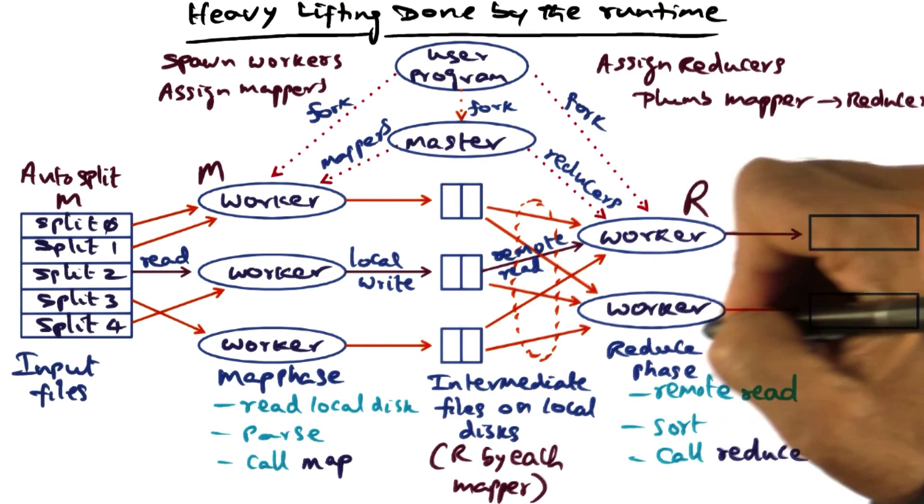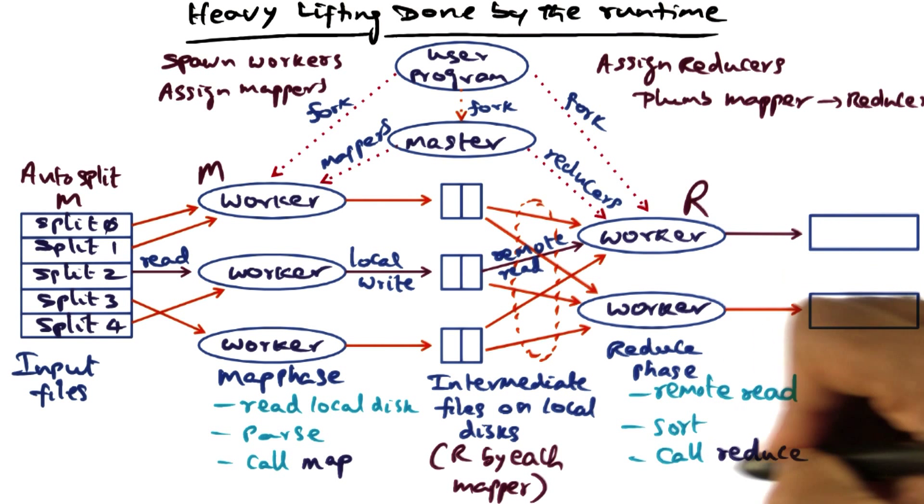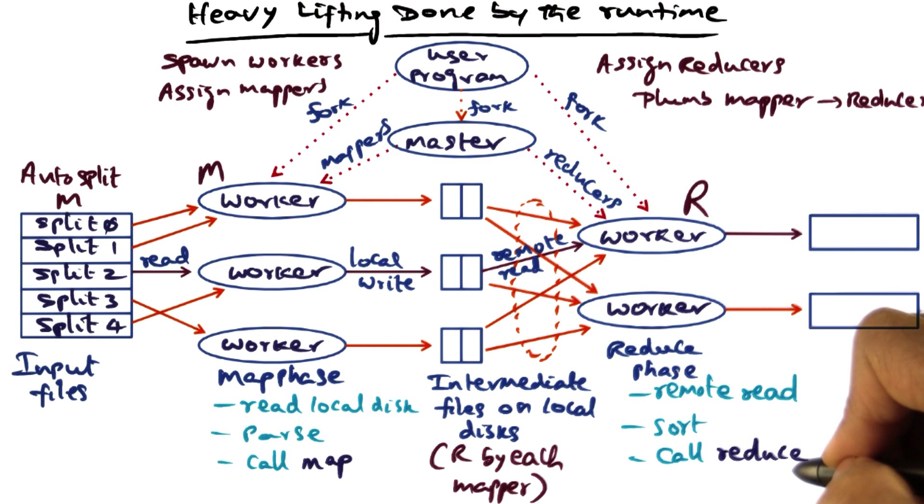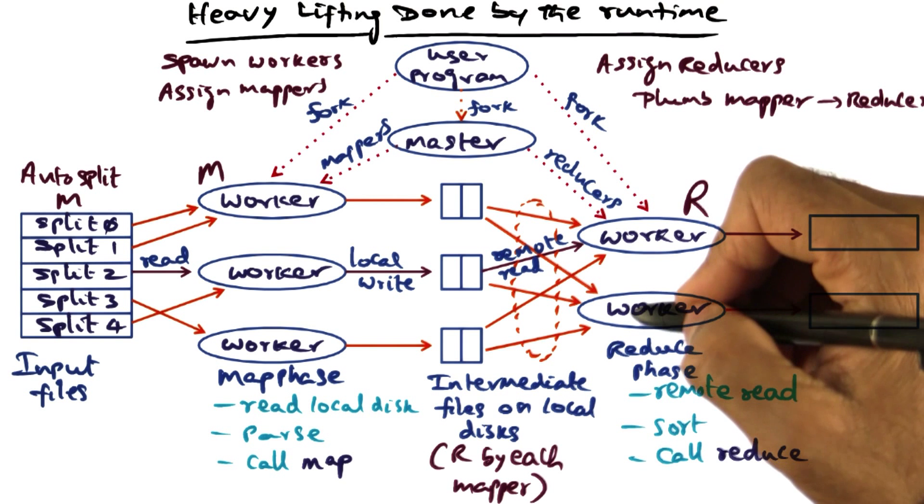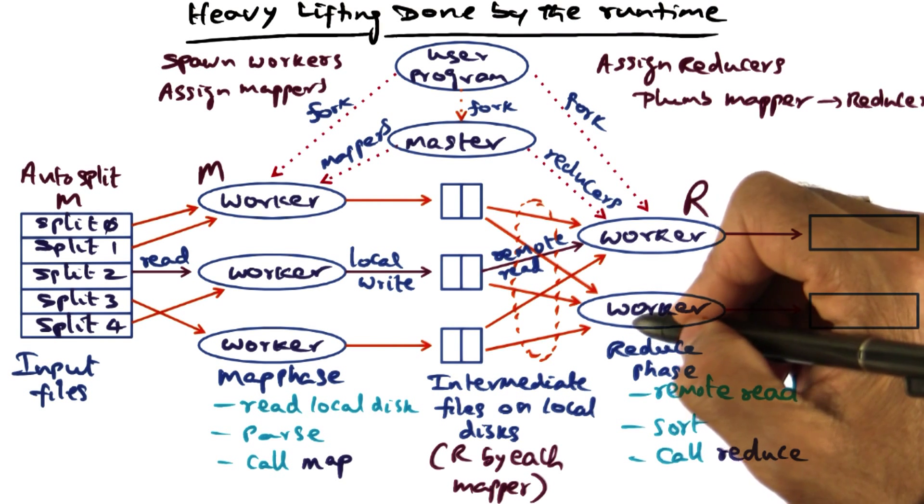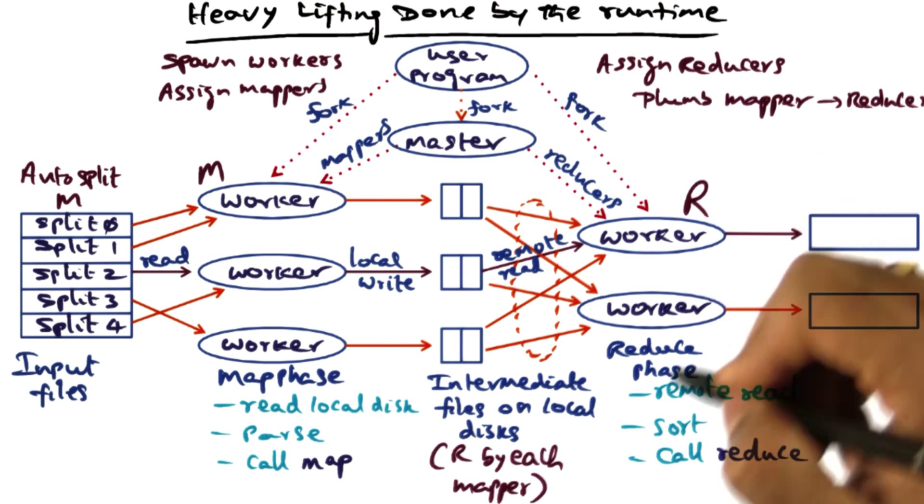And once it has all the data, it can sort it and then call the reduce function. Reduce function is the one that has been written by the domain expert, and this is the point at which the domain expertise comes in, in saying, well I've got the data now, let me do the processing that I want to do for the reduce operation.